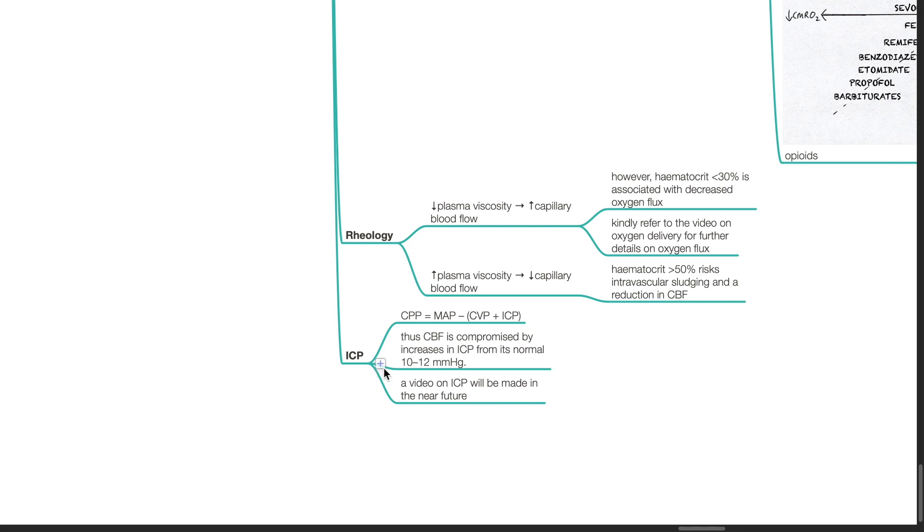ICP. CPP equals MAP minus CVP plus ICP. Thus, CBF is compromised by increases in ICP from its normal 10 to 12 mmHg. A video on ICP will be made in the near future.